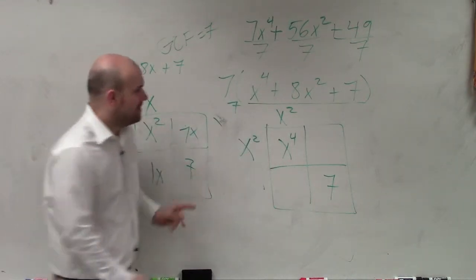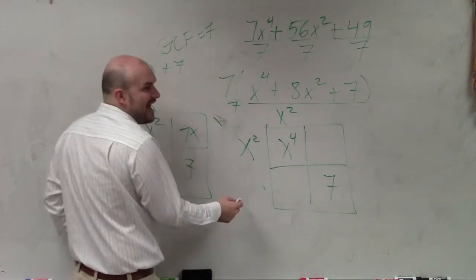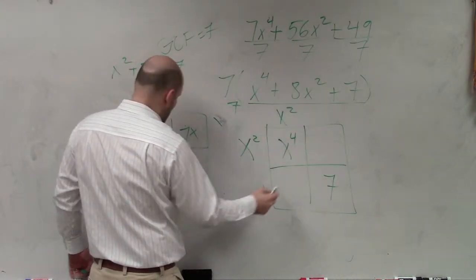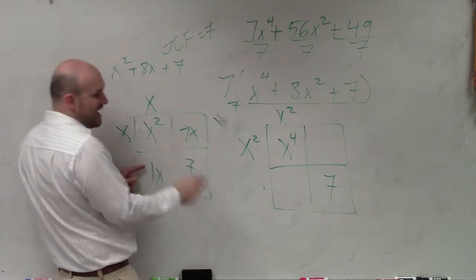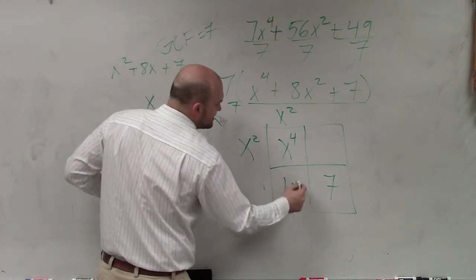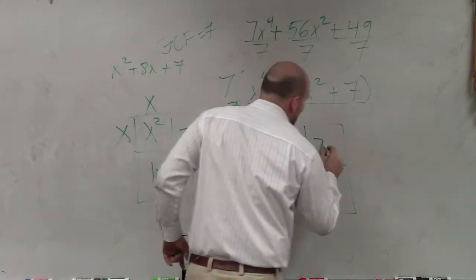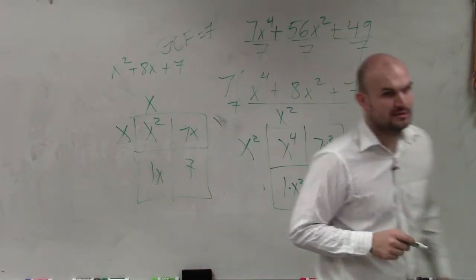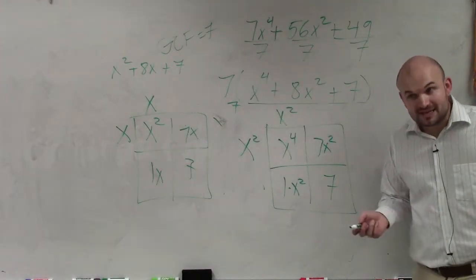And then again, these two middle terms have to add to give you what? 8x squared. So it's going to be instead of 1x and 7x, it's going to be 1x squared and 7x squared.